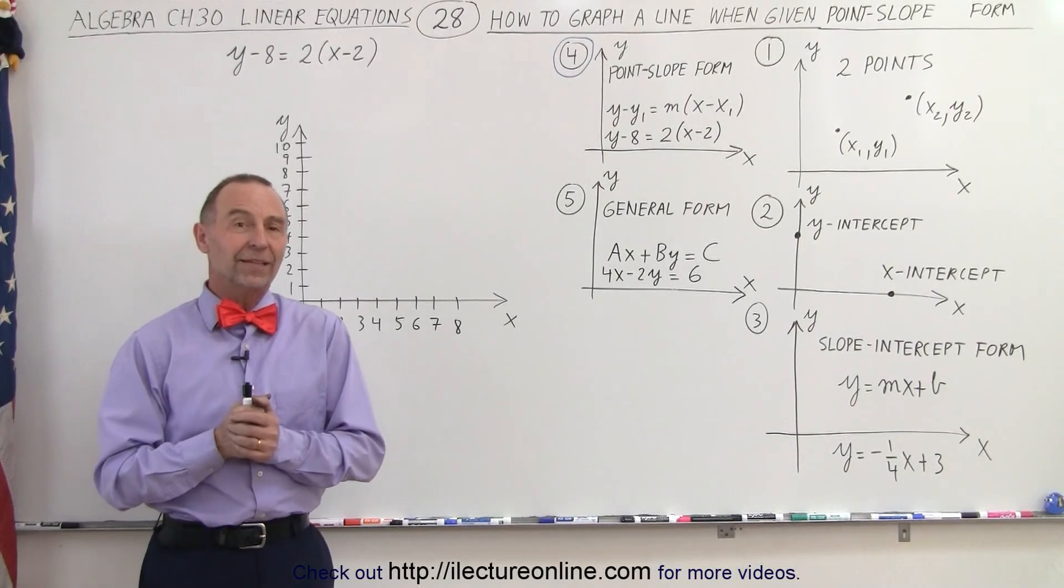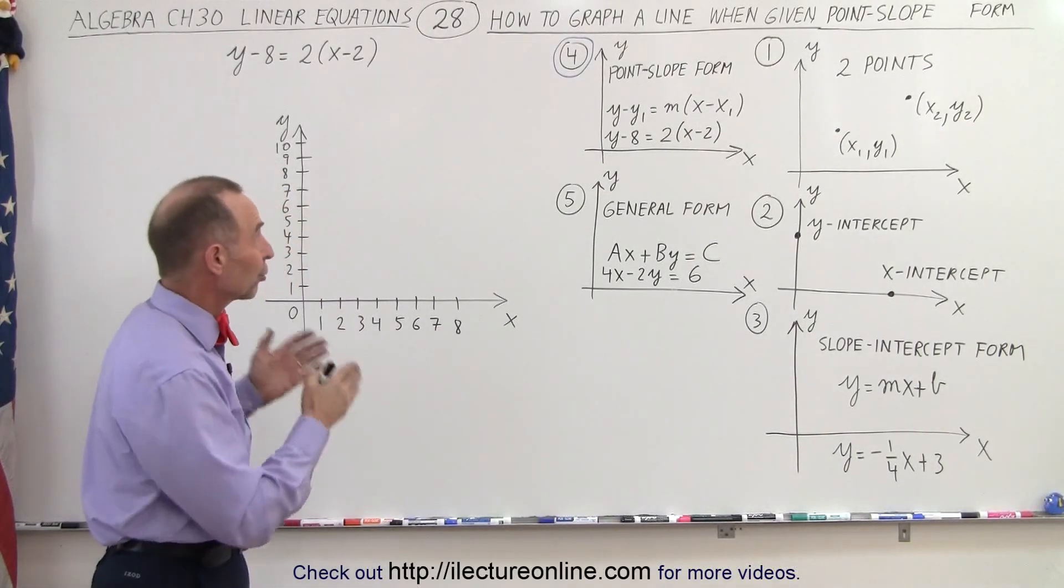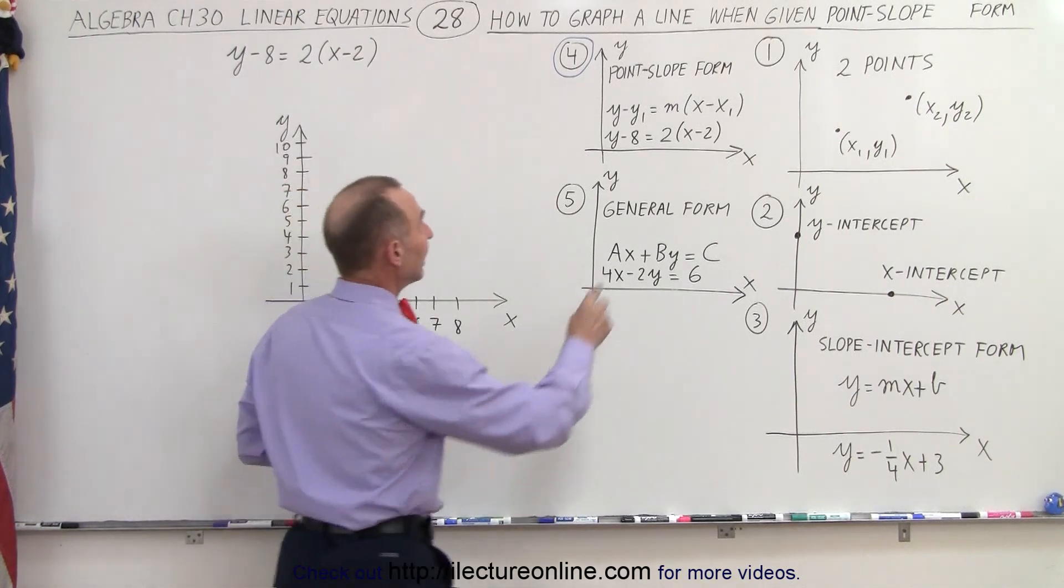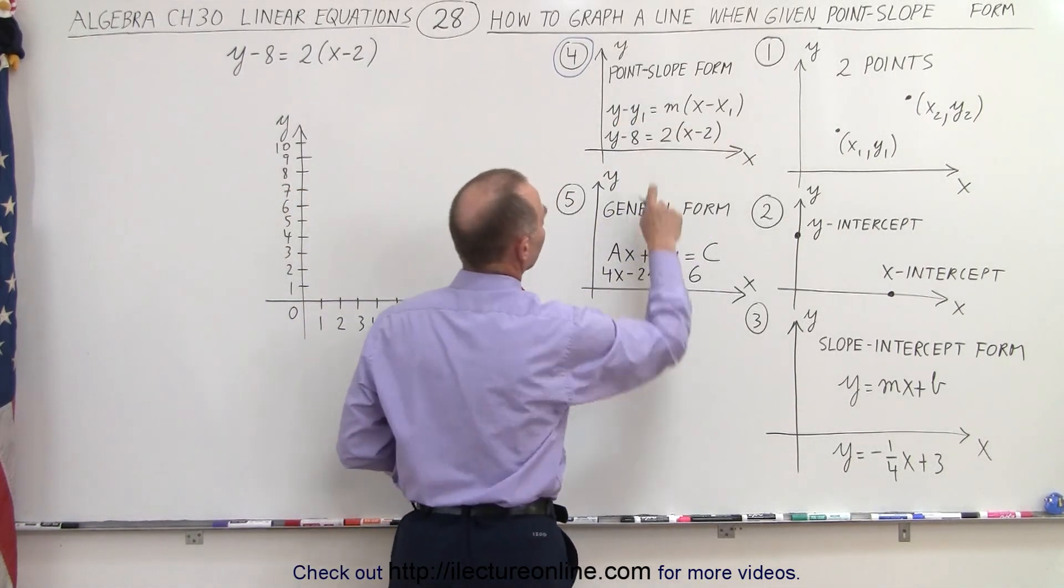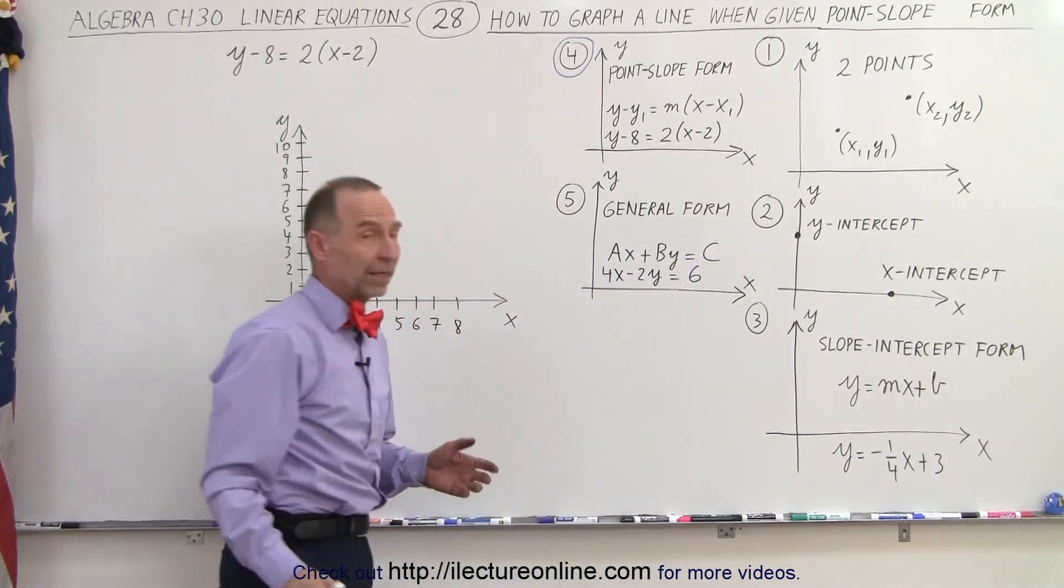Welcome to Electron Line. Our next example deals with trying to graph a line that's given to us in the point-slope form. And that's the general form, and this is the equation we're going to try and graph.